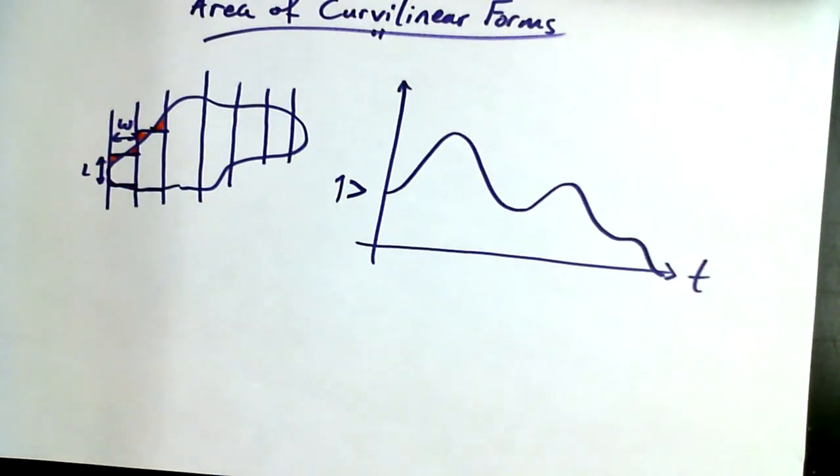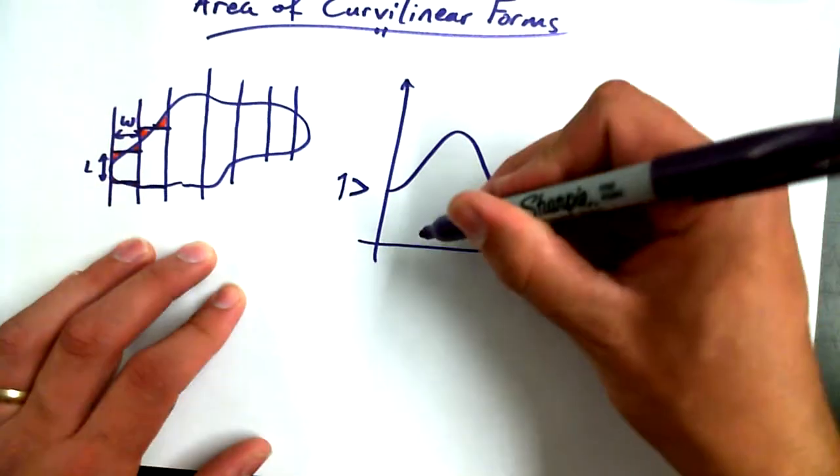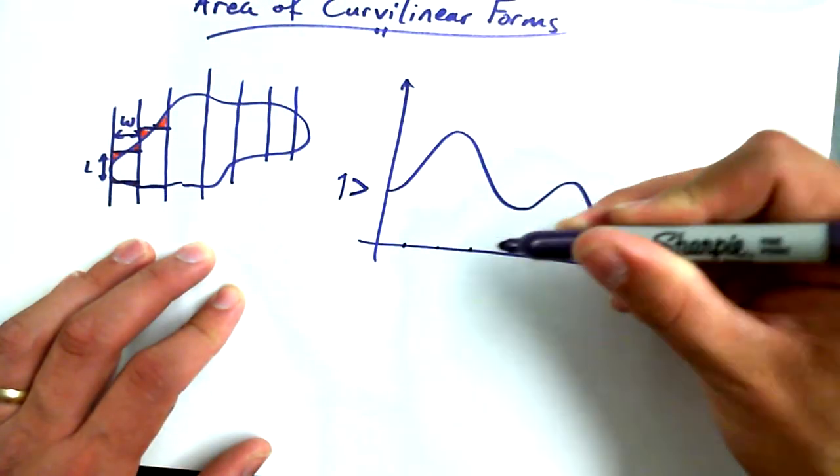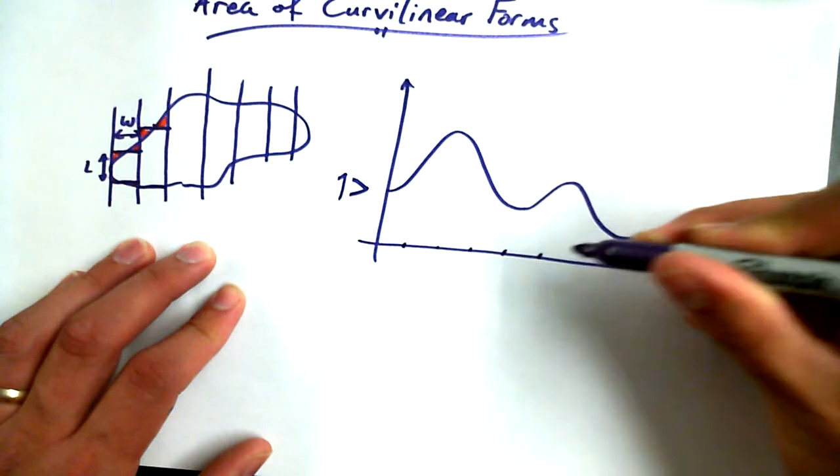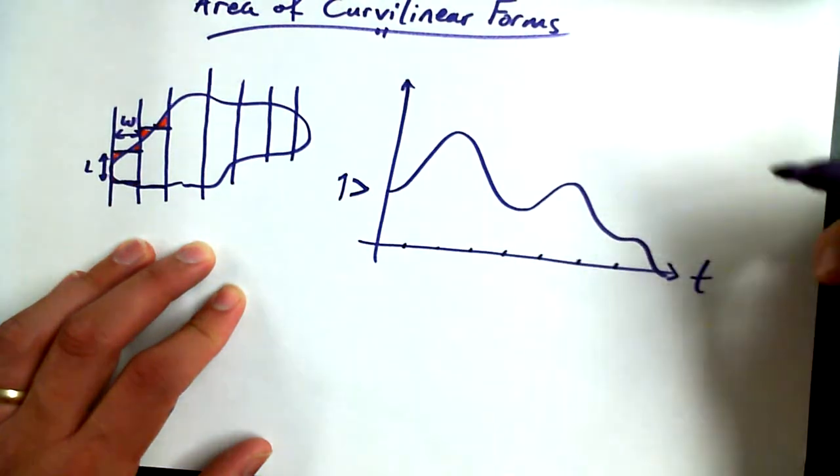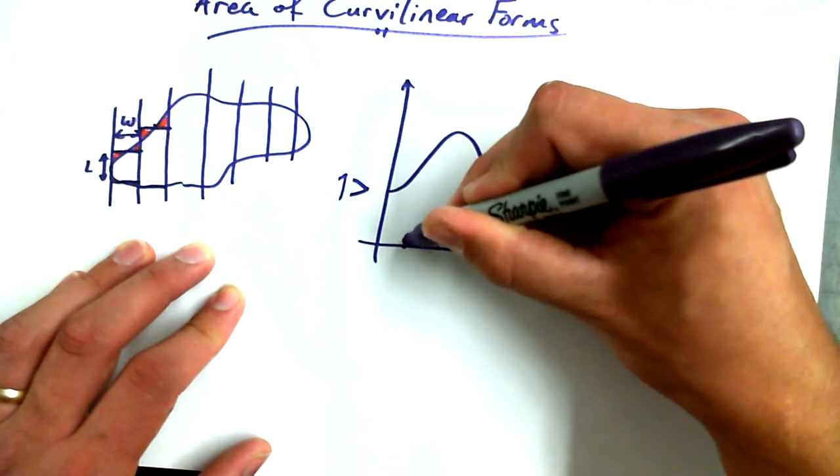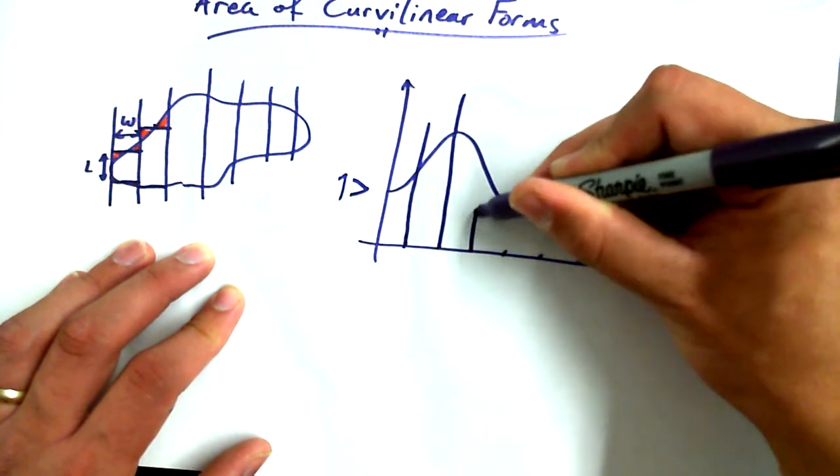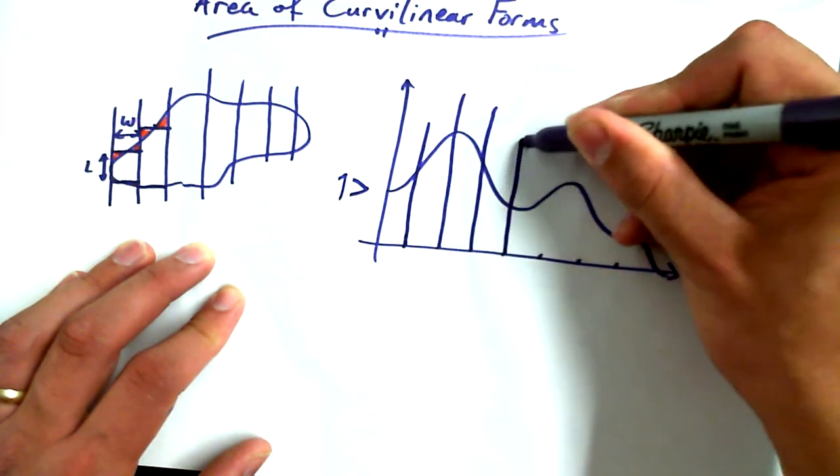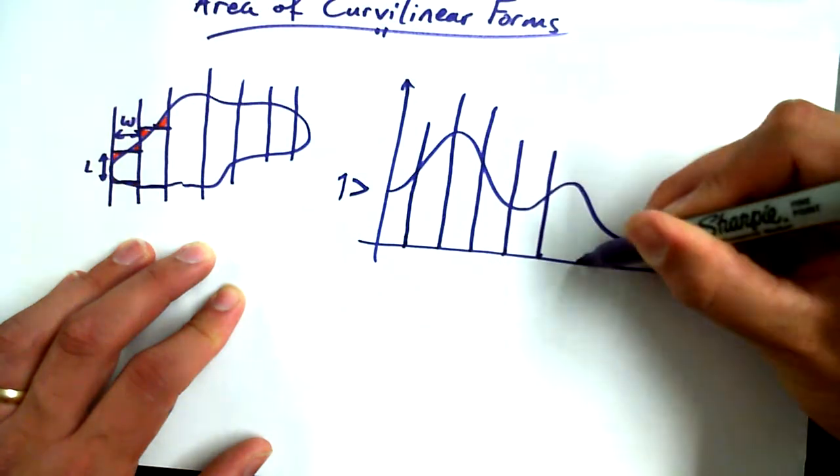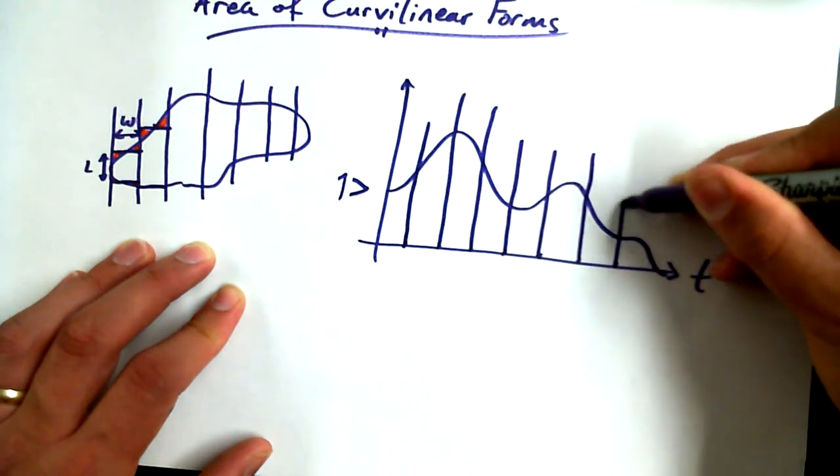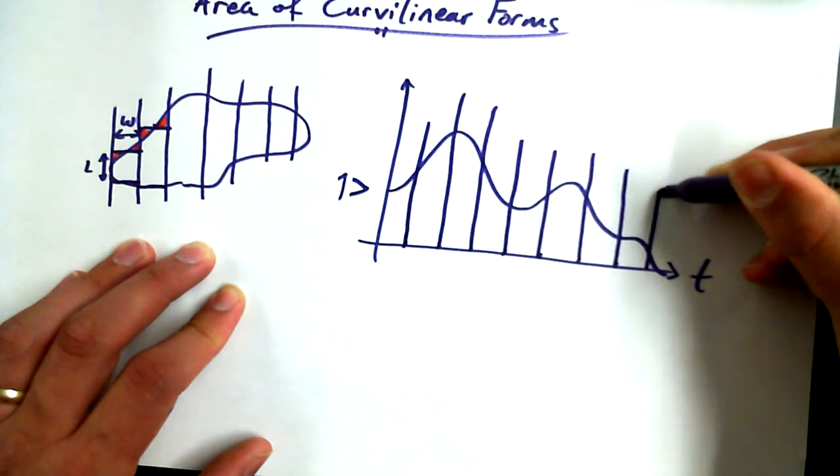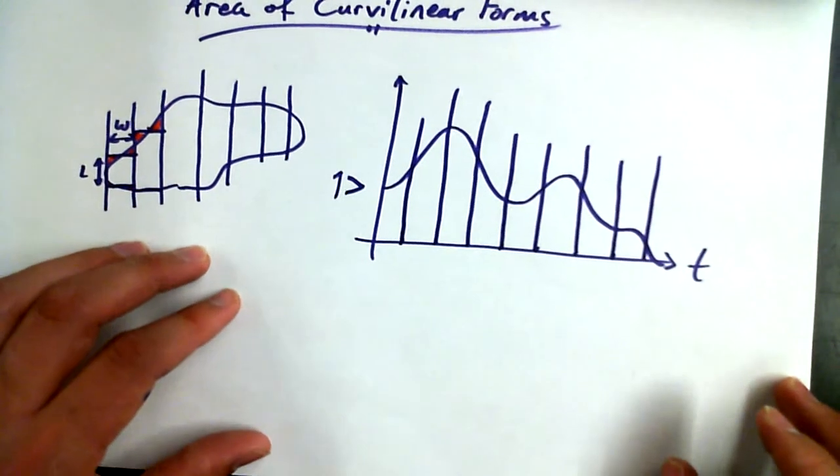The first thing that I would do is I'd start at equal increments, maybe every five seconds, I would start breaking it up into bars. Just like the tracks of land.